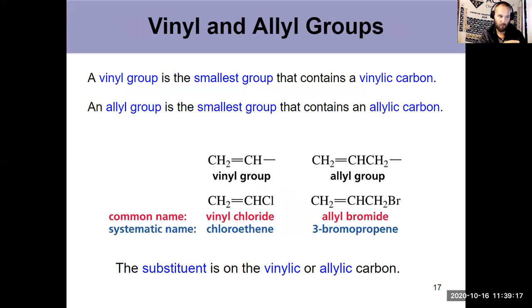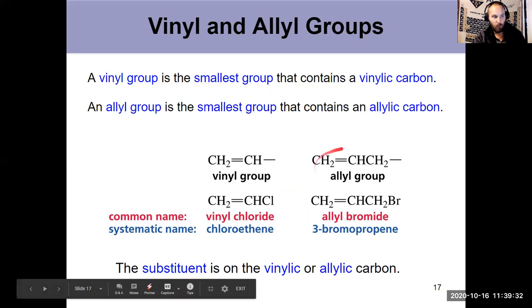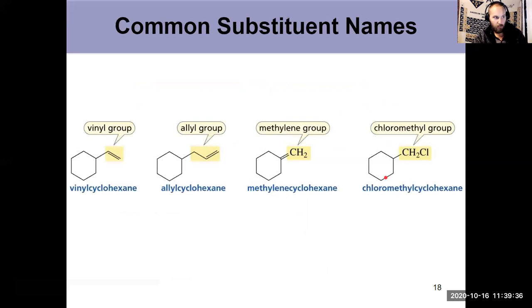Sometimes you see them in common names as well, like vinyl chloride or allyl bromide. Those are not used in IUPAC nomenclature, only in the common naming system. But you will occasionally see me refer to a vinyl group or an allyl group. Those can appear in our substituent names as well. This is a vinyl group as a substituent, this is an allyl group.